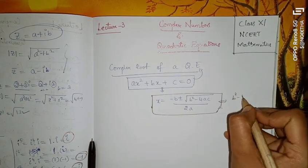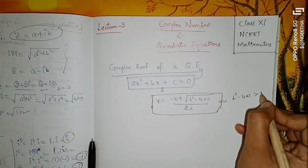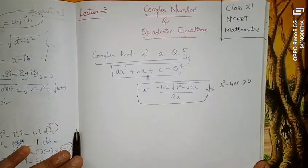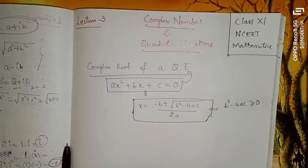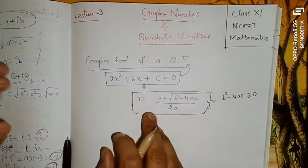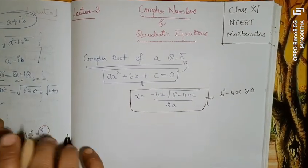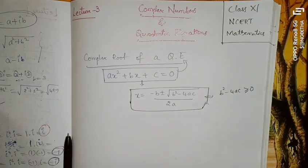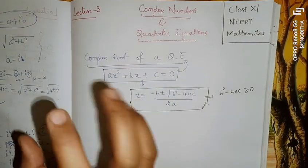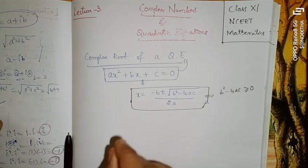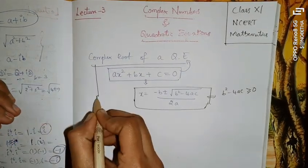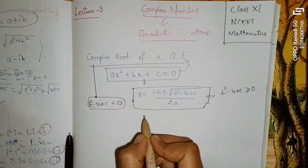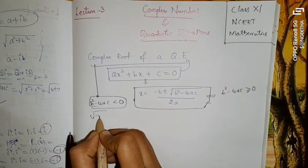But there is a condition: b² − 4ac must be greater than or equal to 0 to apply that formula. Complex roots are possible when b² − 4ac is less than 0 — that is, when we get a square root of a negative number.